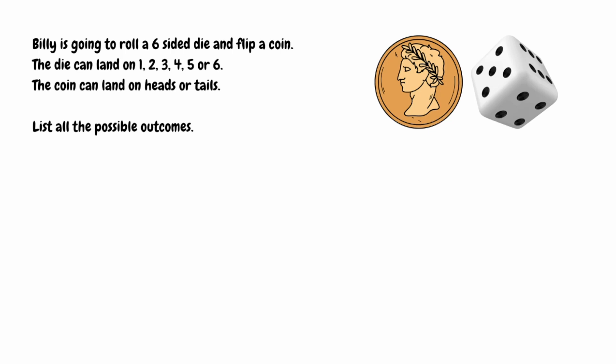Looking at this first example, we've got a six-sided die to roll and a coin to flip. The die can land on 1, 2, 3, 4, 5, or 6, and the coin can land on heads or tails.